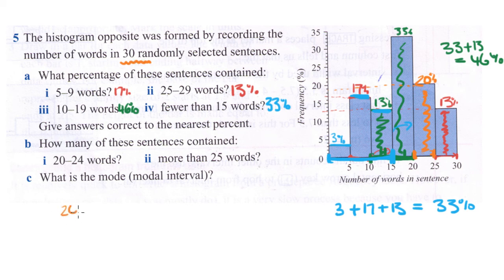You say 20 divided by 100 times 30, that's 0.2 times 30 on your calculator, which gives you an answer of 6. So there were 6 sentences that had between 20 and 24 words in them.